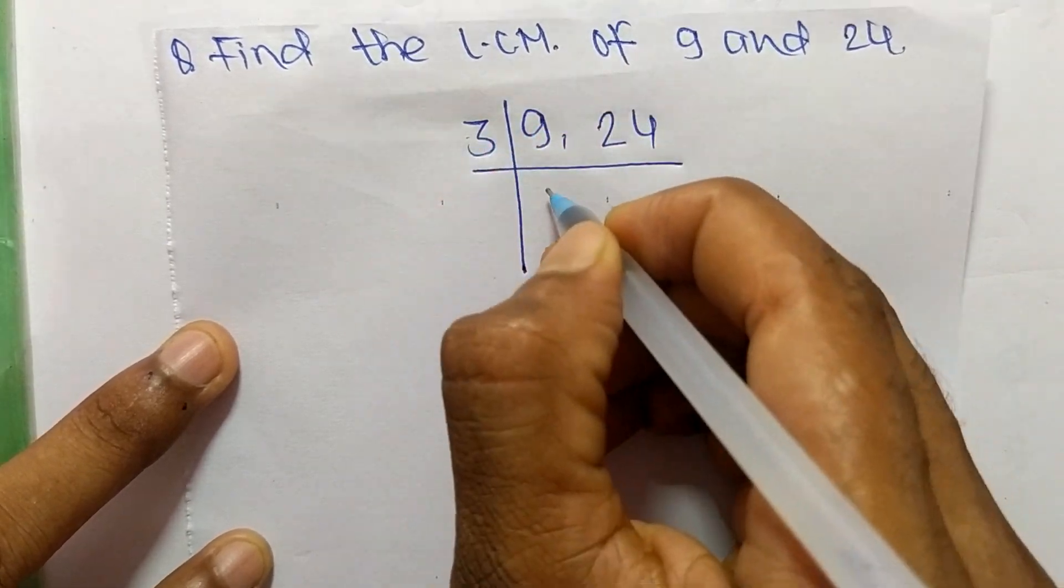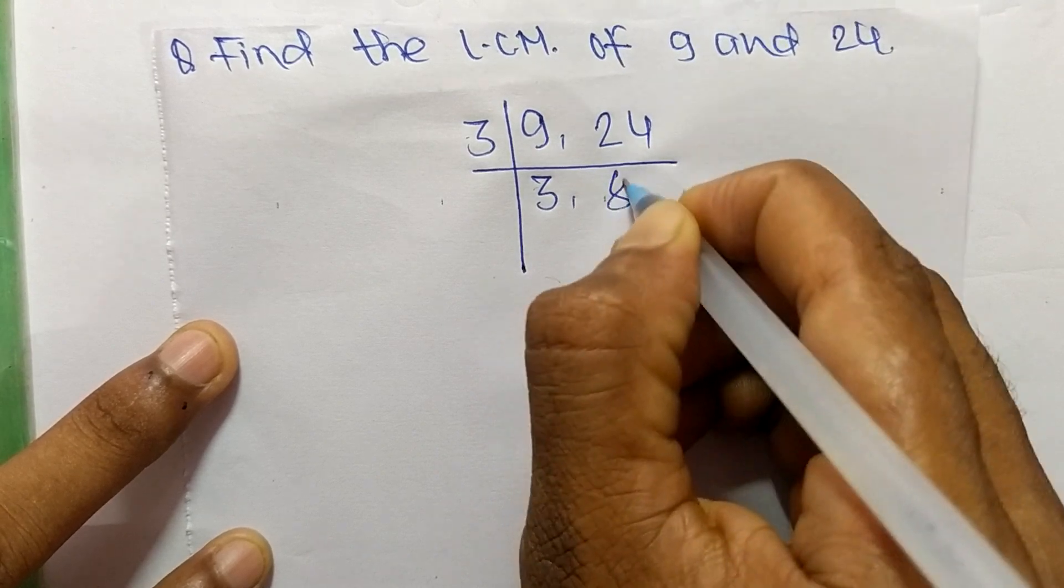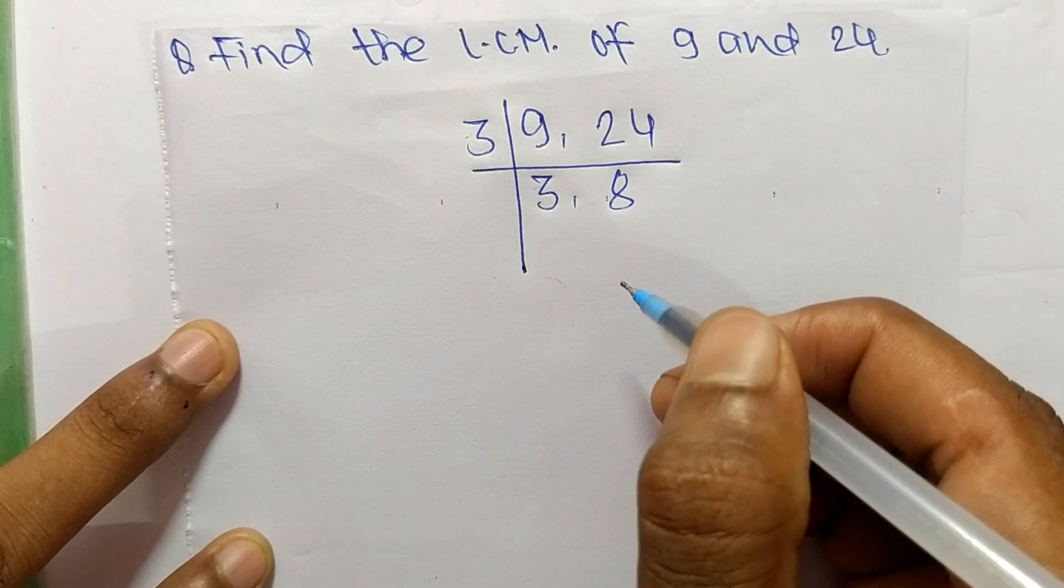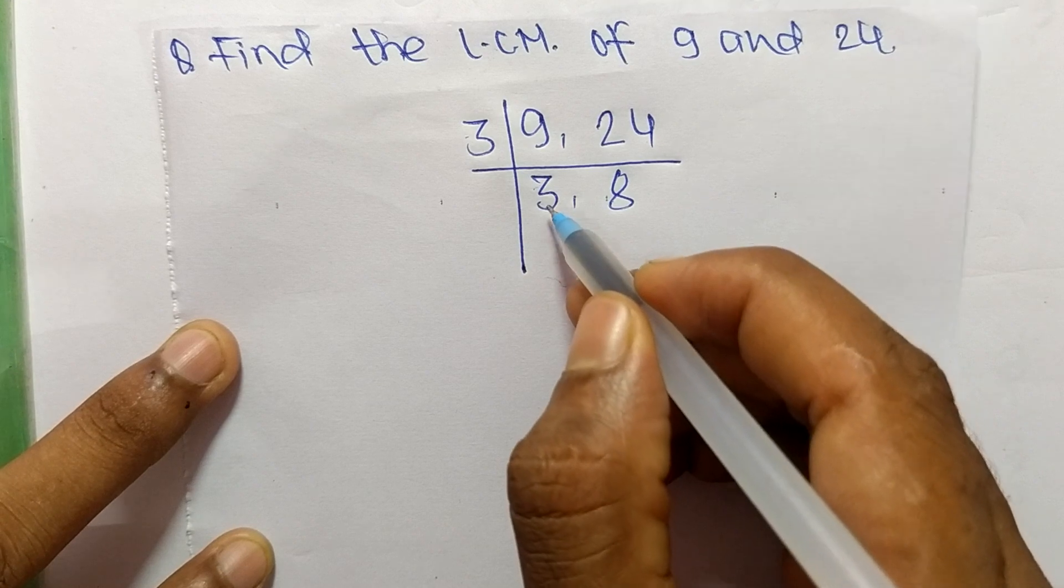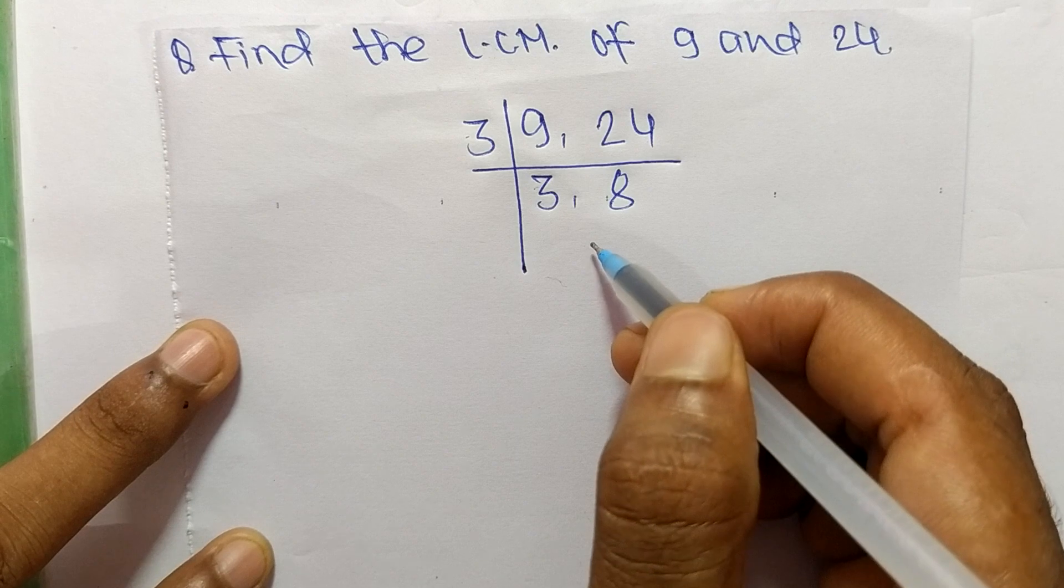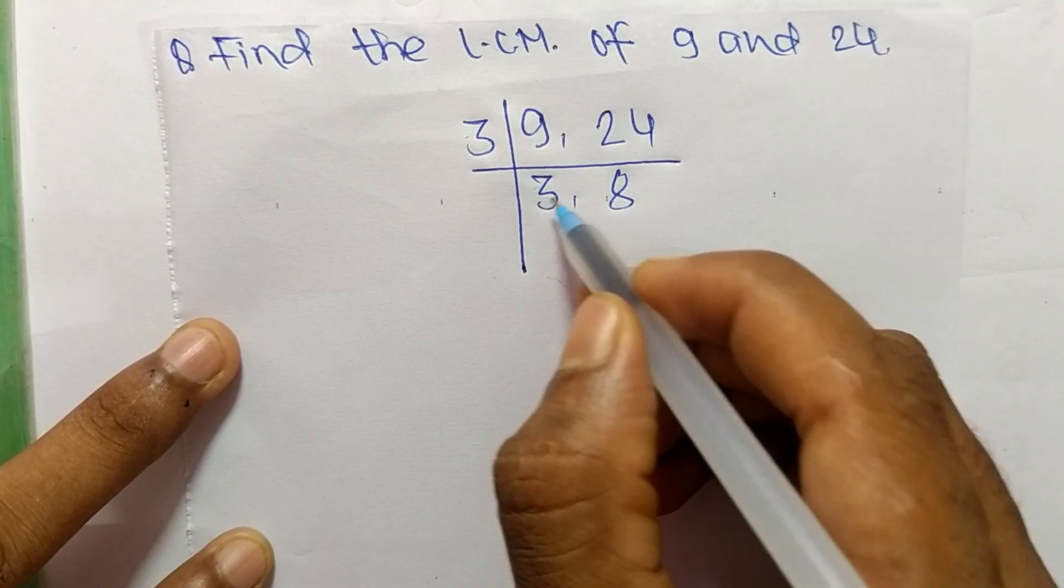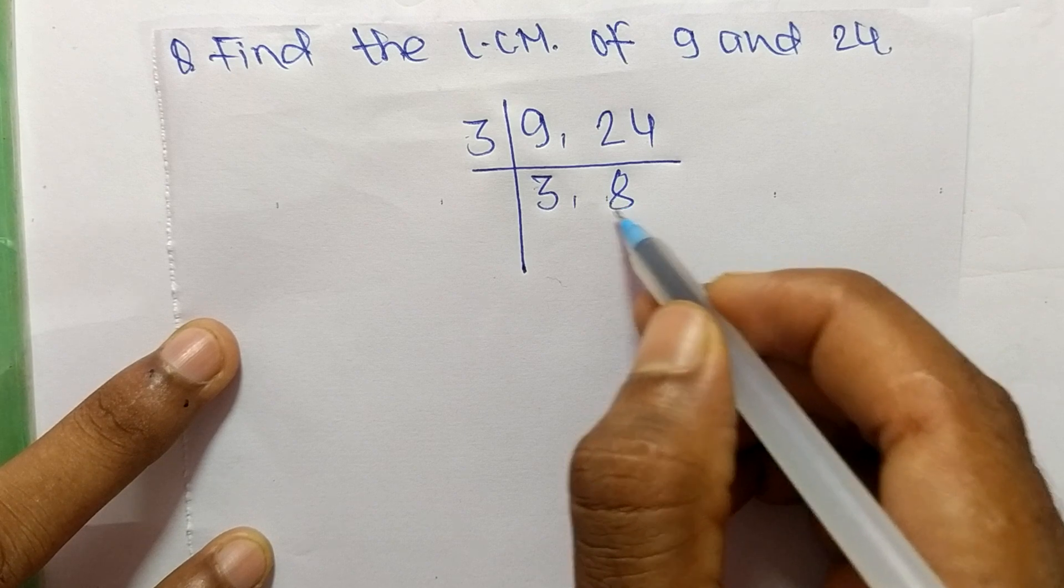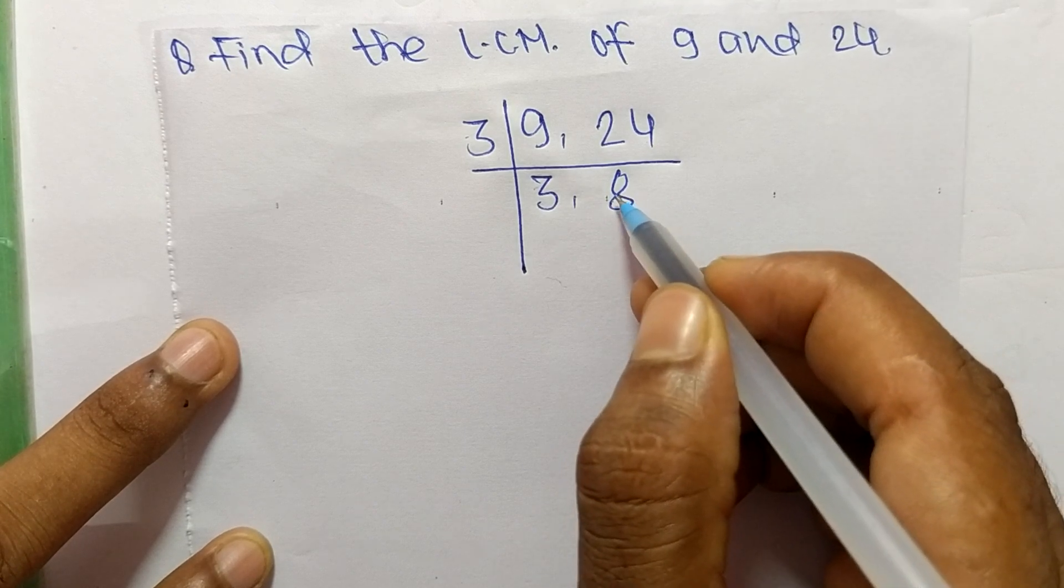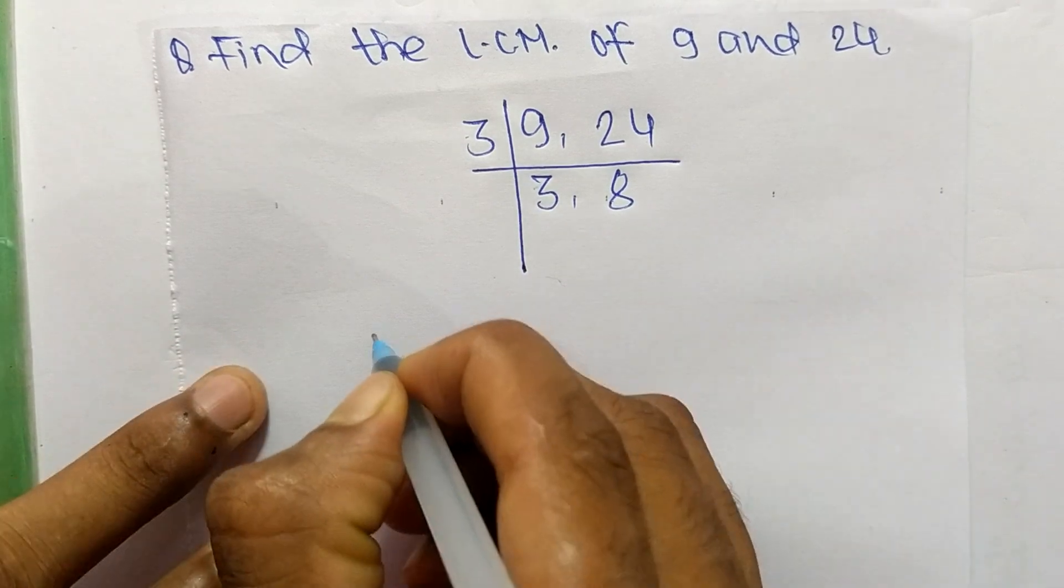3 times 3 means 9, and 3 times 8 means 24. So now we get here 3 and 8, which are not exactly divisible by the same number. If we take 3, then 3 can divide 3 but can't divide 8. And if we take 2, then 2 can divide 8 but can't divide 3.